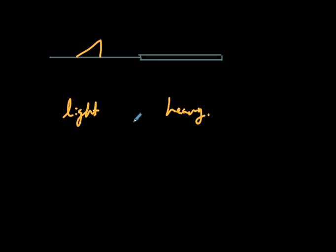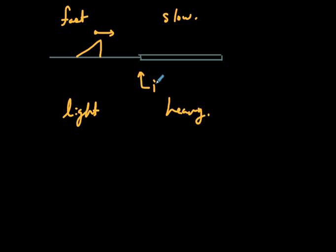Going from light to heavy: the velocity is higher in the light medium and slower in the heavy medium. This is due to inertia — from F = ma, a higher mass requires more force to accelerate. We have limited input energy. At the interface or boundary, some of the wave energy will be reflected and some will be transmitted into the new medium.